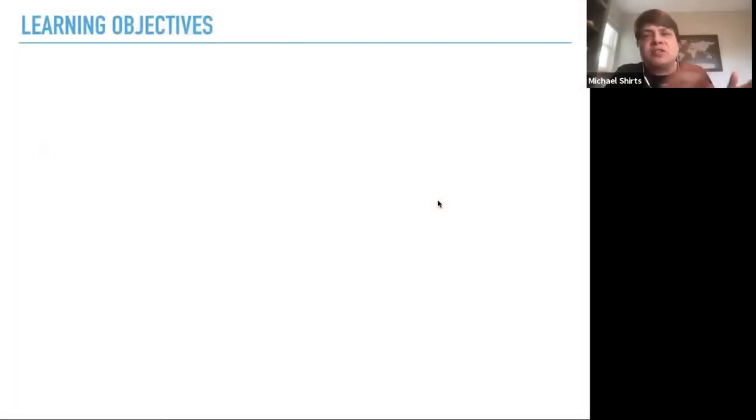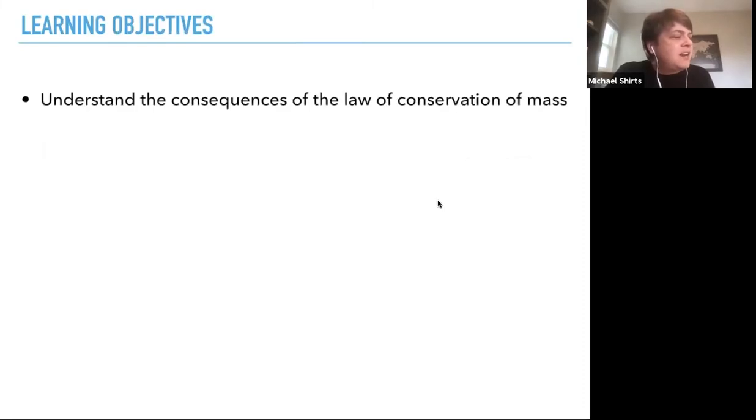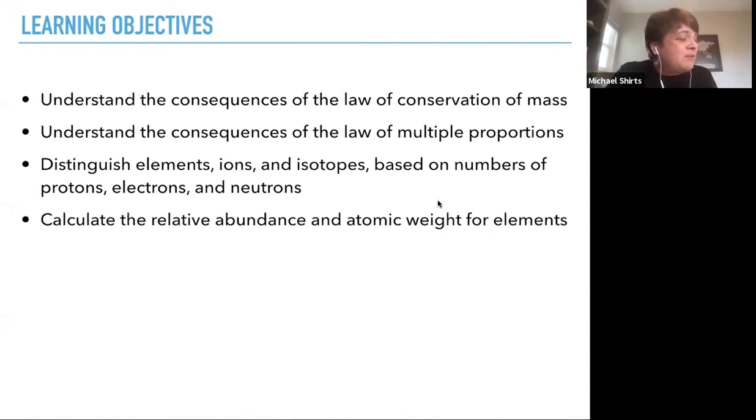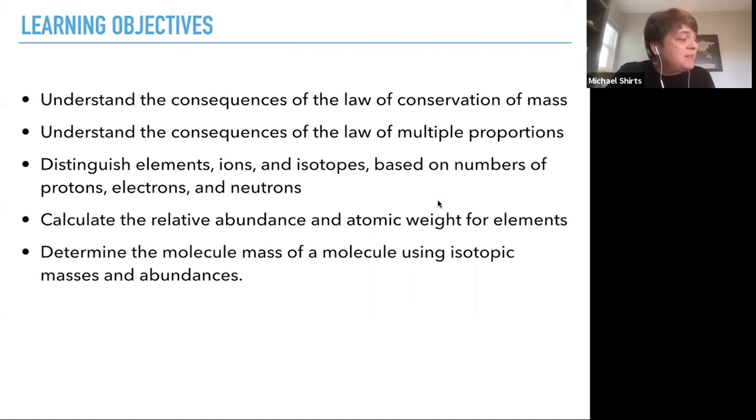What we'll be covering in these three lecture chunks: understanding the consequence of the laws of conservation of mass and the law of multiple proportions and the law of definite proportions, also distinguishing elements, ions and isotopes based on numbers of protons, electrons and neutrons. This should be pretty simple. You'll have seen it before. Calculating the relative abundance and atomic weights for elements and determining the molecular mass of a molecule using isotopic masses and abundances.